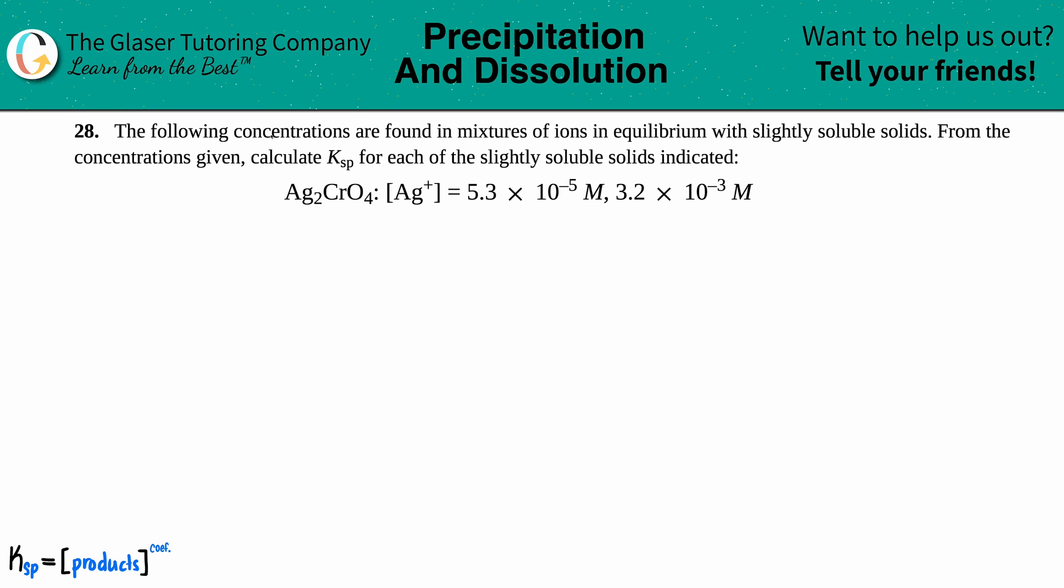Number 28: The following concentrations are found in mixtures of ions in equilibrium with slightly soluble solids. From these concentrations given, we just got to calculate the Ksp for each of the slightly soluble solids indicated.